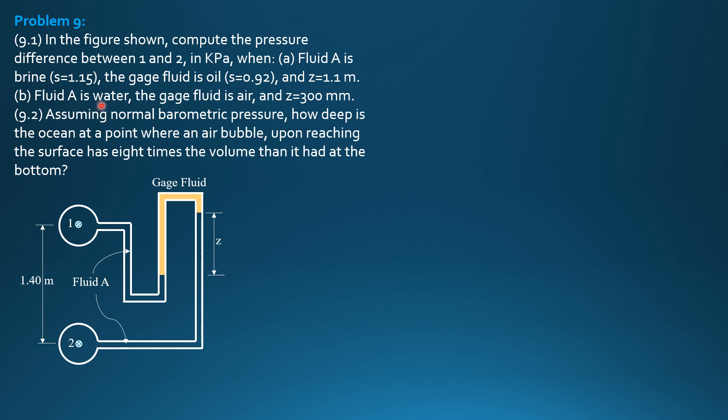Then, fluid A is water, the gauge fluid is air, and Z is 300 mm. Then, assuming normal barometric pressure, how deep is the ocean at the point where an air bubble upon reaching the surface has 8 times the volume than it had at the bottom?